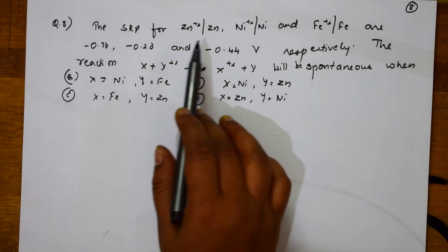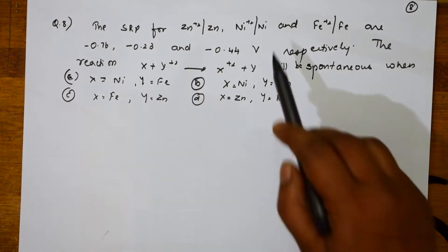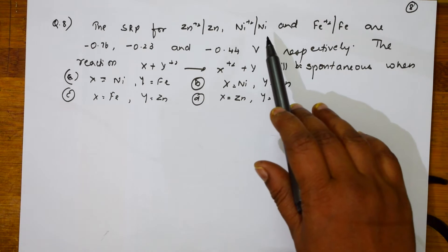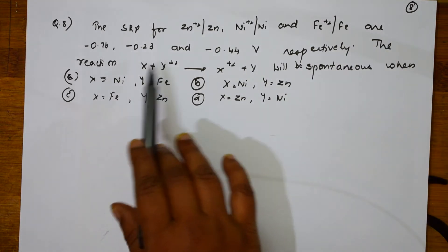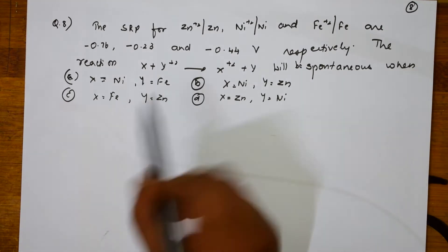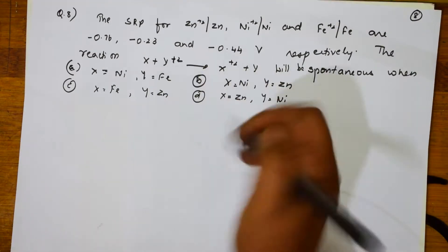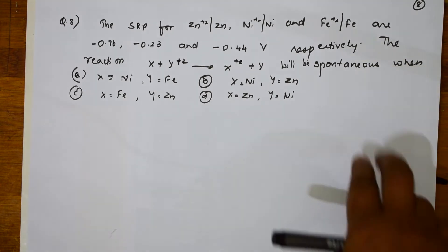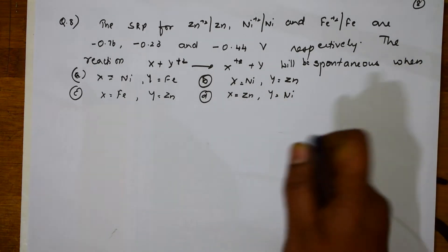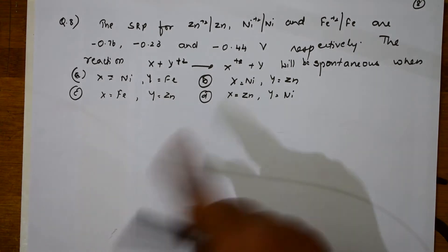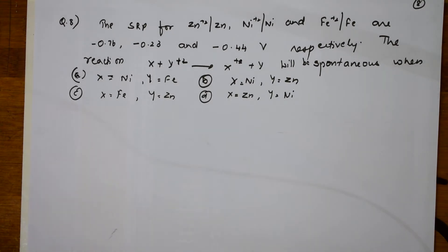Here would I give me the SRP of Zn²⁺/Zn and Ni²⁺/Ni, Fe²⁺/Fe are so much. Standard reduction potentials are given. The reaction X + Y²⁺ gives X²⁺ + Y will be spontaneous when. This particular reaction will be spontaneous since when this particular option you need to find.